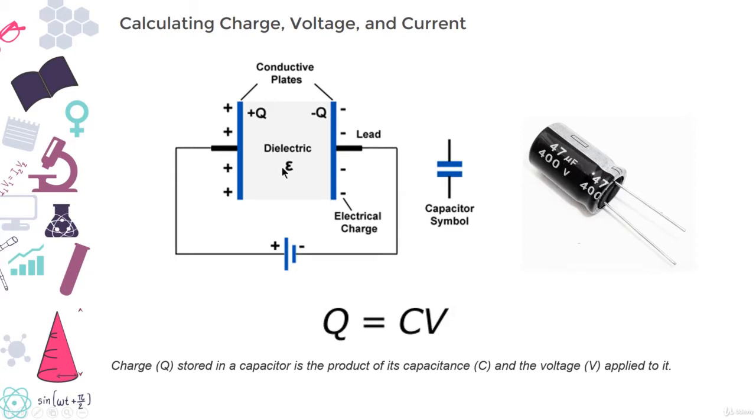The equation also gives us a good way to define the value of one farad. So one farad is the capacitance to store one unit of energy, which is measured in coulombs, per every one volt.